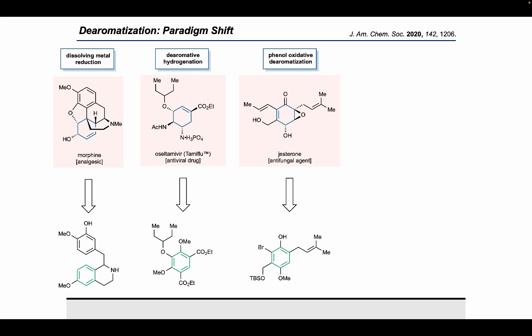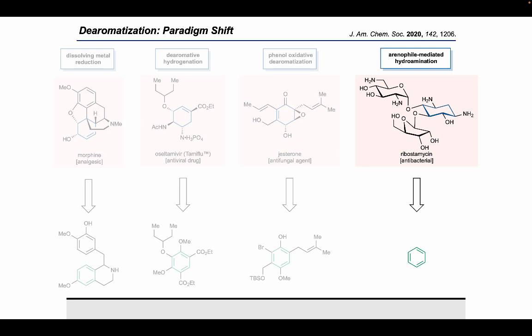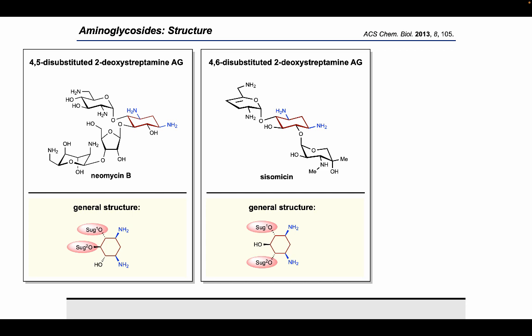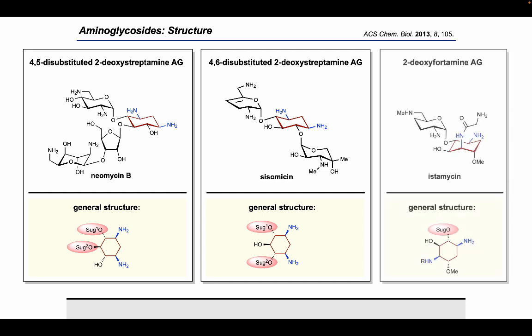With our general proof-of-concept achieved, we envisioned a paradigm shift in which, while previous dearomative functionalizations required a fully functionalized arene, we now traced back our target molecule to a simple, unfunctionalized arene such as benzene. We selected aminoglycosides as a suitable target for several reasons, both structurally and with regard to biological activity. The 2-deoxystreptamine class remains one of the most abundant types of aminoglycosides. The similar motifs can be realized, namely the 2-deoxystreptamine core highlighted in red. The main differences can be attributed to the locus of the sugar attachment, as well as the identity of the actual sugars attached. Furthermore, a 2-deoxyfortamine core exists as well, in which the amine and oxygen functionalities switch places with respect to the 2-deoxystreptamine core.